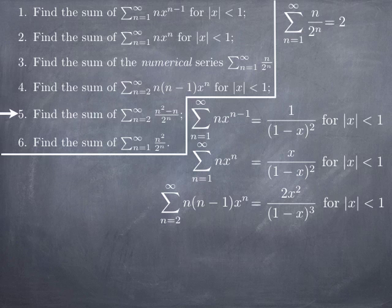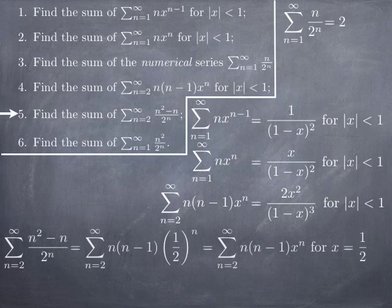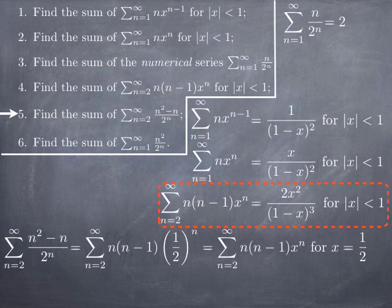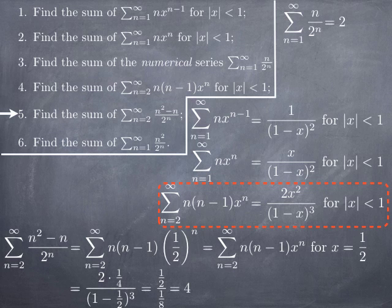In question 5, we want the sum of the series from n = 2 to infinity of (n² minus n) over 2^n. We factor n from n² minus n to get n(n-1), and write 1 over 2^n as (1/2)^n. This is an instance of the power series from question 4 evaluated at x = 1/2. Plugging x = 1/2 into 2x² over (1 minus x)³: x² = 1/4, so 2 times 1/4 = 1/2; and (1 minus 1/2)³ = (1/2)³ = 1/8. So we get (1/2) divided by (1/8), which is 4.